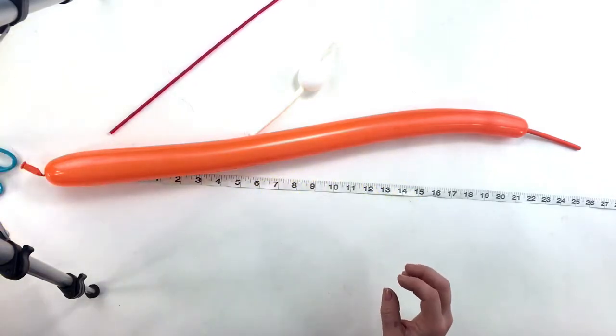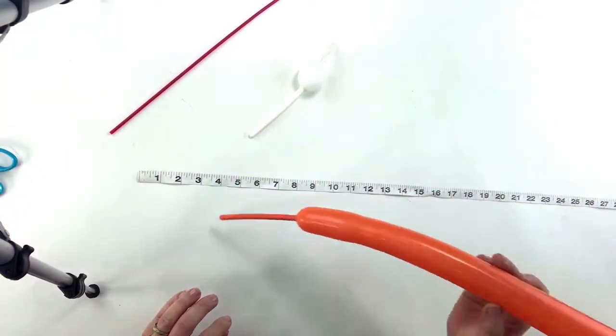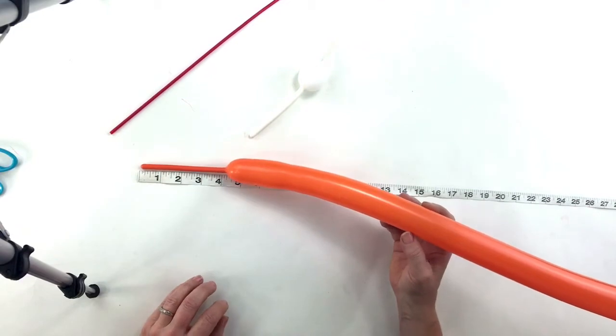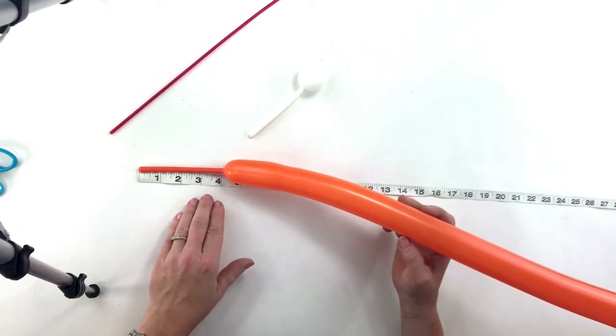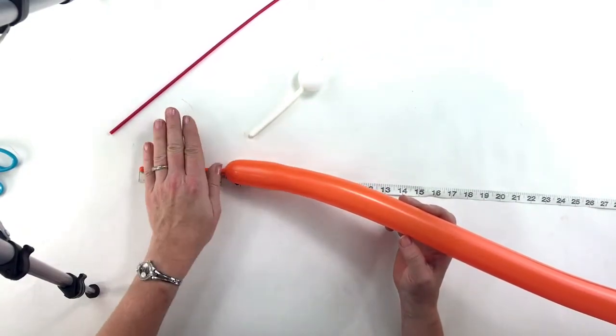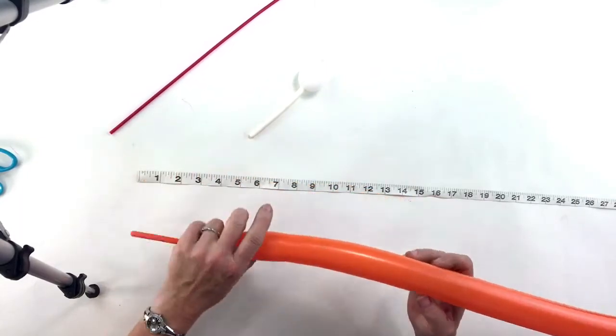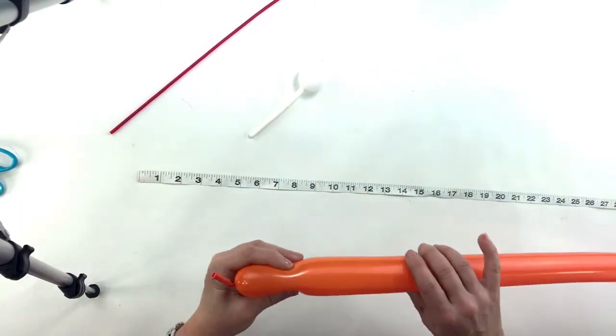For this one you want to take an orange 260 and inflate it all but a four inch tail, which is a five finger tail, and make sure you let a nice puff of air out. You want this mushy when you twist it.